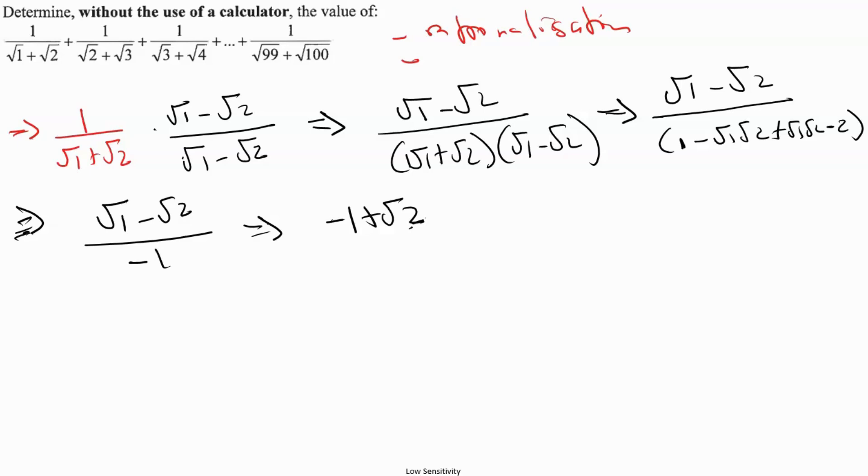So let's do it. We can rewrite this equation as 1 over root 1 plus root 2, then we're going to do the rationalization, root 1 minus root 2 over root 1 minus root 2.